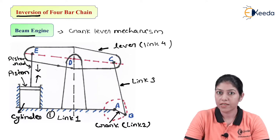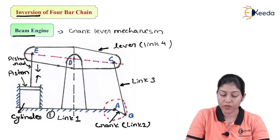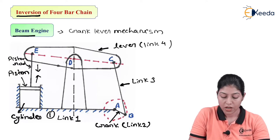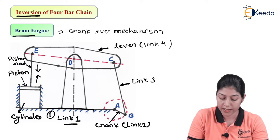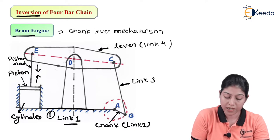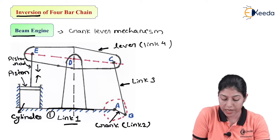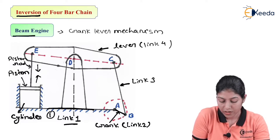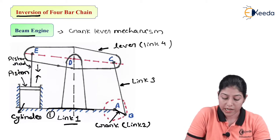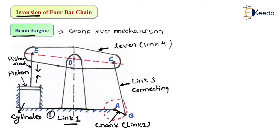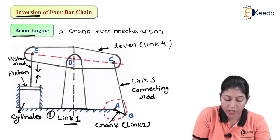In the four-bar chain mechanism, we generally use it to convert rotary motion into oscillating or reciprocating motion. In the beam engine or crank lever mechanism, there are four links. Two main parts are the crank and lever. Here one link is fixed — this particular base we are considering as link 1 which is fixed — and here we are also considering a cylinder or piston-cylinder arrangement.